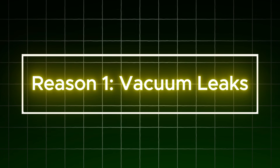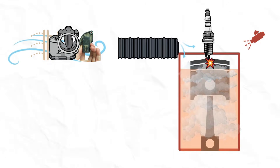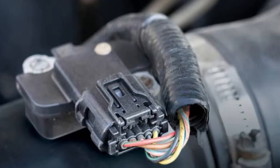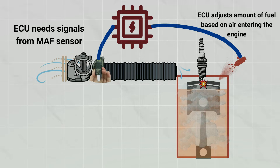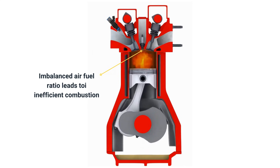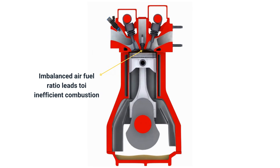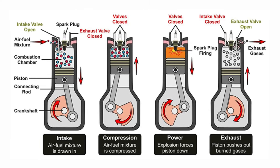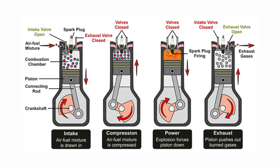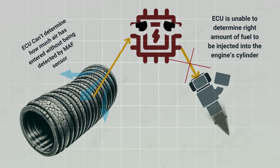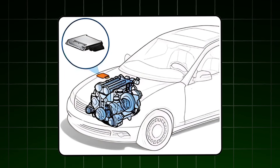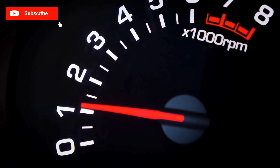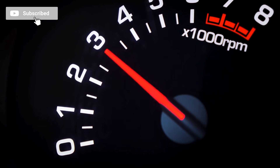Reason 1: Vacuum leaks. One of the primary causes of unstable RPM fluctuations at idle is a vacuum leak. When extra unmeasured air enters the engine, it disrupts the ideal air-to-fuel ratio of 14.7:1, which is critical for efficient combustion. Without this precise balance, the engine control unit (ECU) cannot accurately calculate the amount of fuel needed, leading to erratic engine behaviour such as sudden surges or drops in RPM.